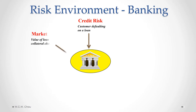Market risk also affects a bank. For example, if the value of the collateral that a bank has taken to secure a loan has changed — say that collateral is a piece of real estate and the market value of that real estate has gone down — that increases the risk of that loan for the bank.